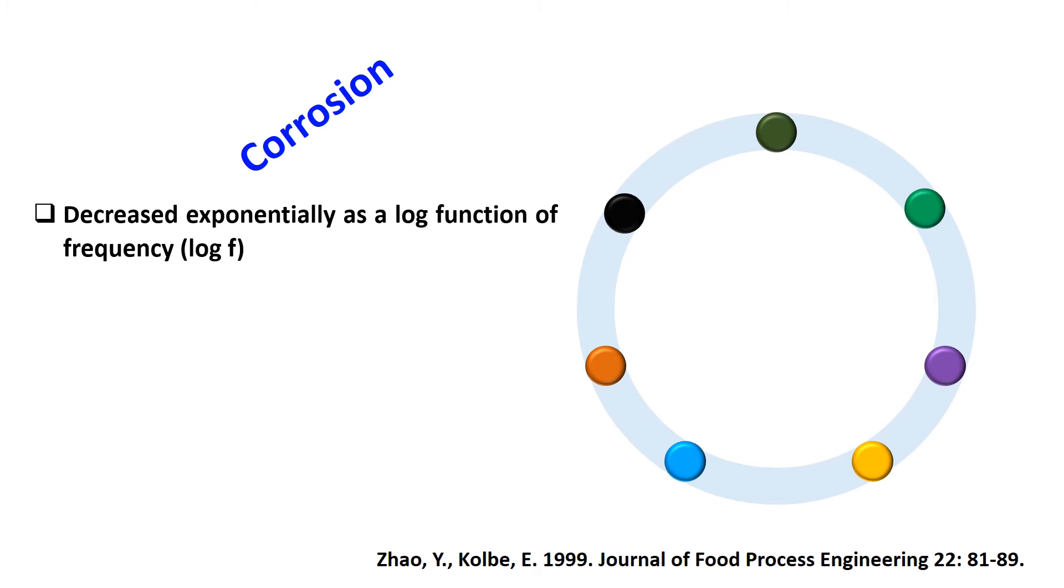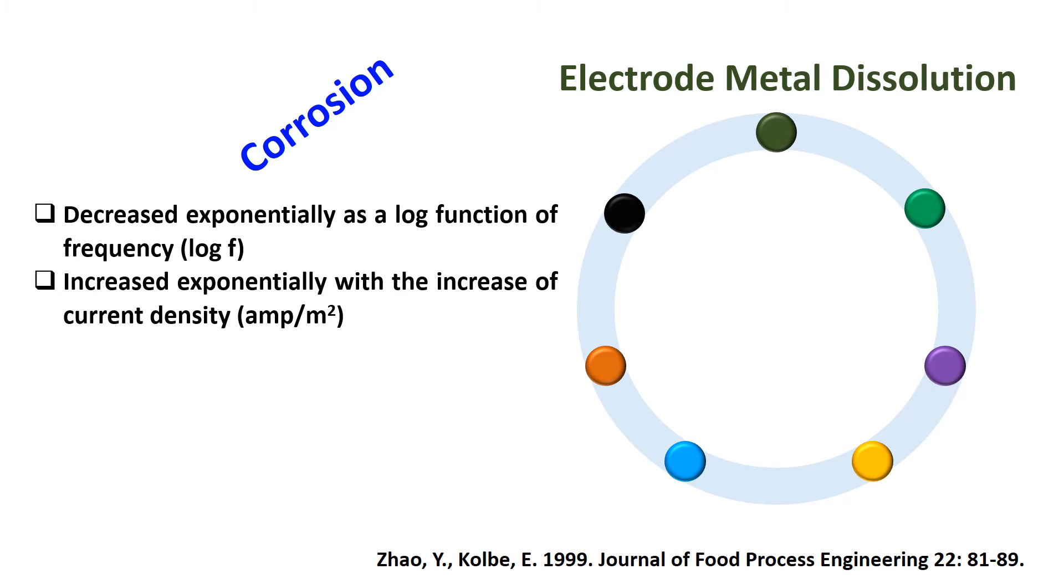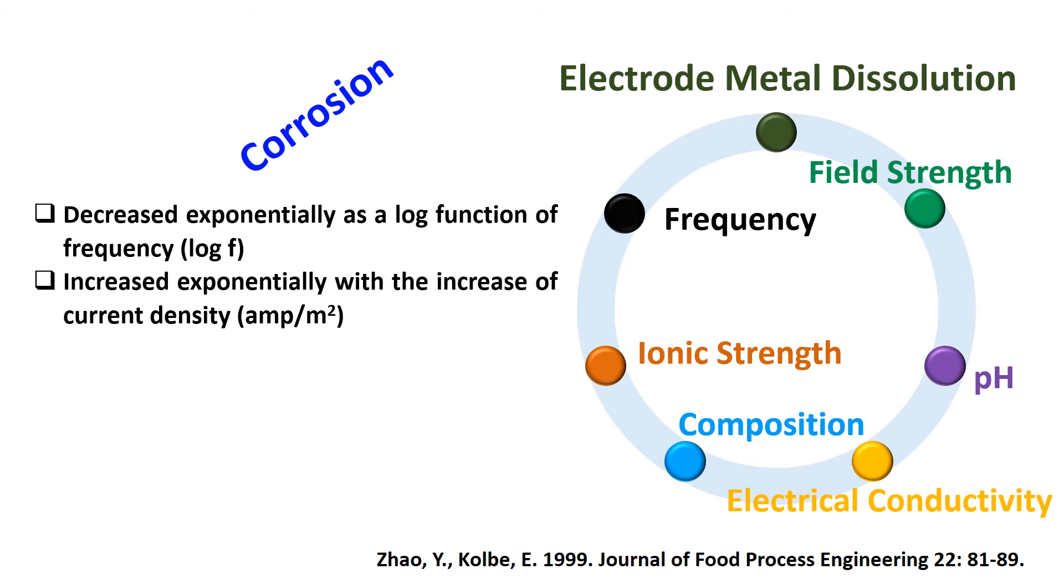Corrosion decreased exponentially as a log function of frequency and increased exponentially with the increase of current density. The rate of metal released from the electrodes to the heating medium depends on frequency and applied field strength, ionic strength, pH, composition, and electrical conductivity of the heating medium.